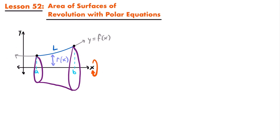Looking at this graph, we're working within the rectangular coordinate system with our x-axis and y-axis, and a curve represented by the rectangular equation y = f(x). We form a surface of revolution by taking a particular section of that curve — an arc length L between two values of x, a and b — and revolving that part of the curve around the x-axis, forming this surface of revolution.